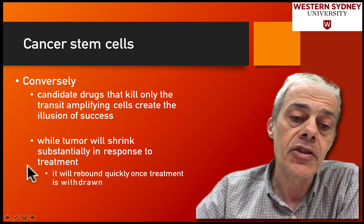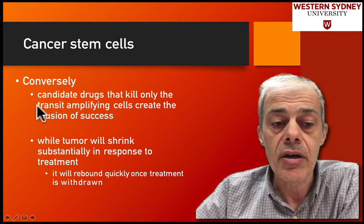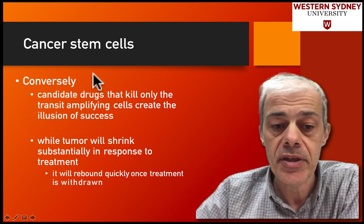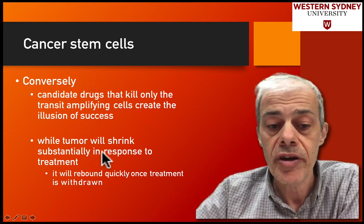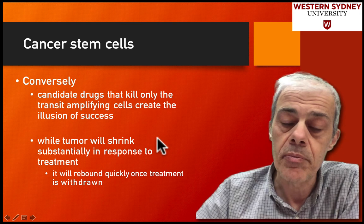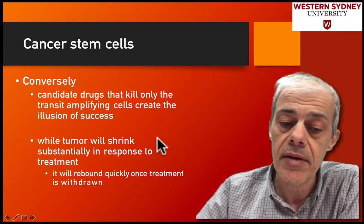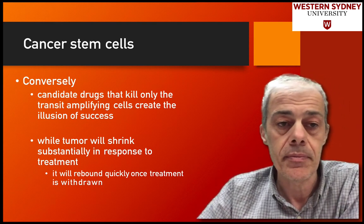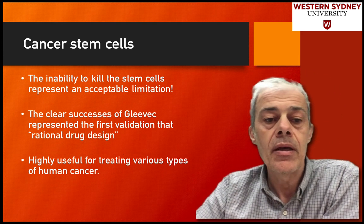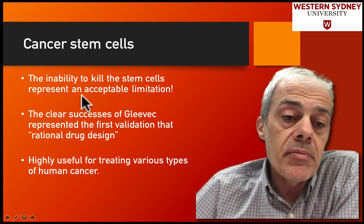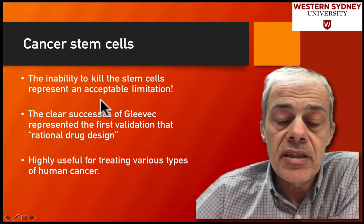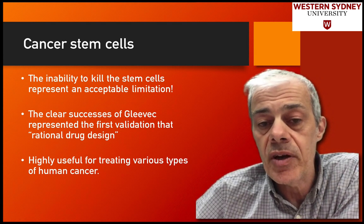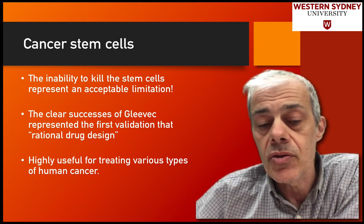The converse situation is that the drug kills off the transiently amplified cells but not the cancer stem cells. So the cancer shrinks quickly, it looks like it's been very successful, but because the stem cells are still there, they're going to grow again and reform that growth. We have to say that the inability to kill cancer stem cells is an acceptable limitation, because it still has a profound effect on the development of the cancer, which may last for many months or years.